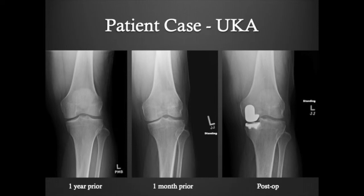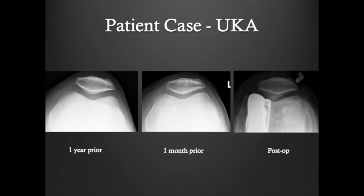Now we move on to real patient cases. This first patient had isolated medial compartment arthritis. On the initial x-ray, there is still adequate space in the medial compartment. However, in x-rays just one month prior to surgery, that space has started to collapse as the patient had progressive loss of cartilage in the meniscus. The post-operative x-ray shows a unicompartmental arthroplasty in good position. The replacement was isolated to the medial aspect of the knee, and the rest of the knee, which did not have arthritis, is left intact.